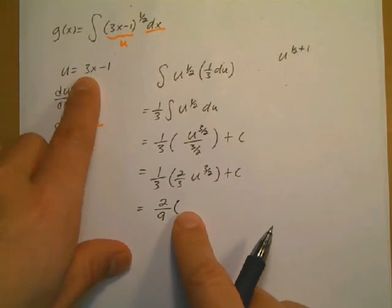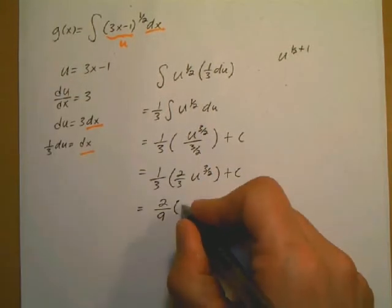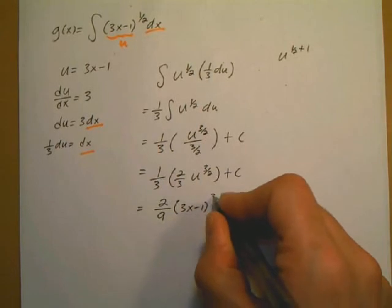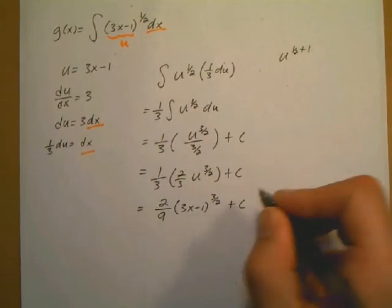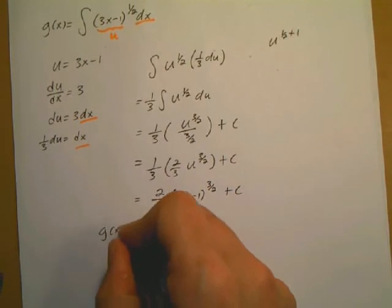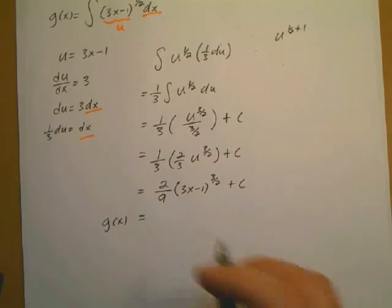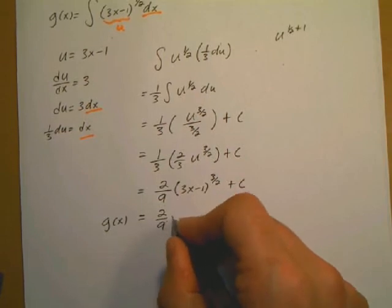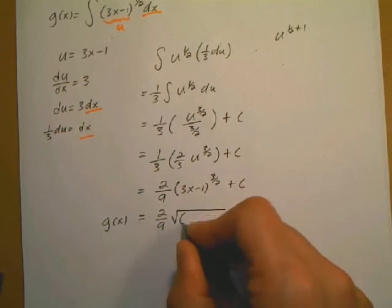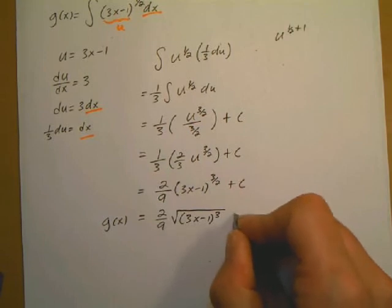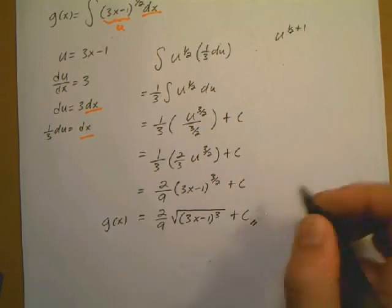Everything back in terms of x: u gets replaced with 3x minus 1, so it's 2 over 9 times (3x minus 1) to the 3 over 2, plus C. Since the problem started with a radical, I express the answer back in radical form: 2 over 9 times the square root of (3x minus 1) to the 3rd power, plus C.